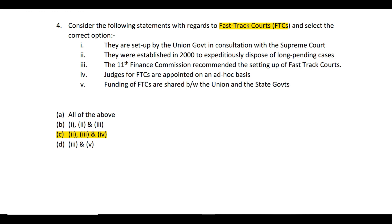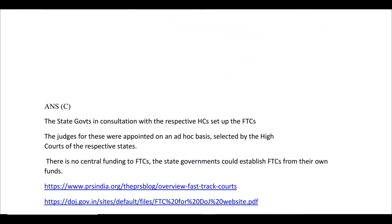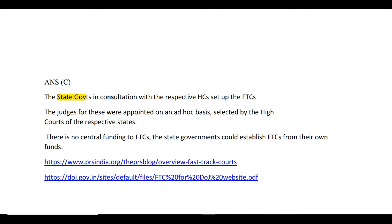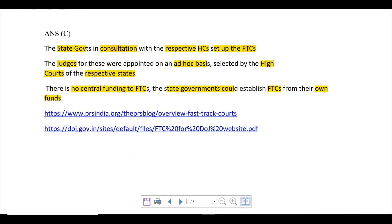So the correct answer is option C — statements 2, 3, and 4. State governments set up Fast Track Courts in consultation with the respective High Court. Judges are appointed on an ad hoc basis and selected by the High Court of the respective state. There is no central funding — state governments establish them from their own funds. Links from PRS India and the Department of Justice, Government of India, have been provided for further reading.